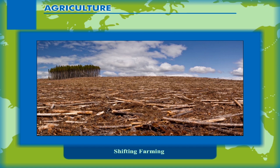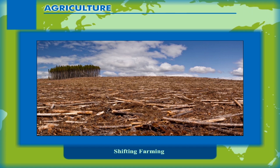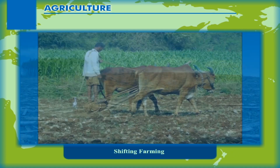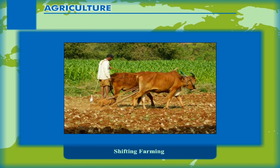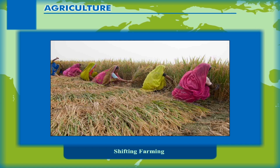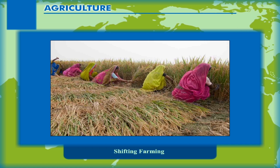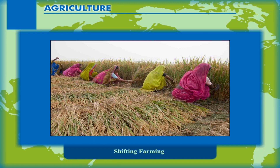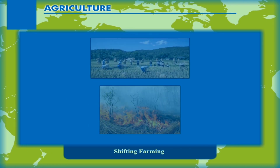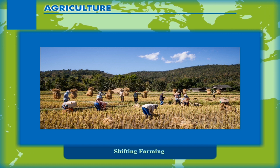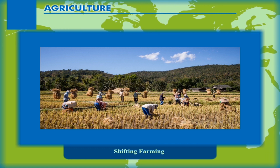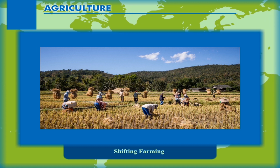Shifting farming is a simple and primitive method of farming. This type of farming is practiced by clearing a patch of forest or by burning bushes. It is also known as slash and burn agriculture. When the crops are ready, the people join together, harvest, and store for consumption. The land is prepared for cultivation by felling trees and burning them. Crops like maize and cassava are grown using simple tools, and the produce is consumed by the community. People move from one area to another when the soil loses its fertility.